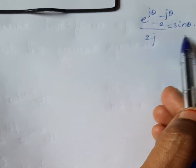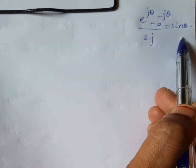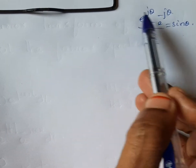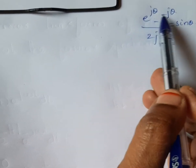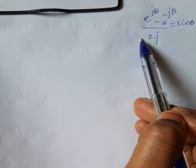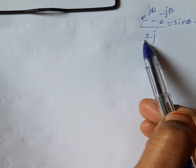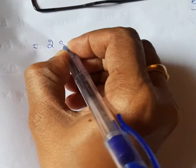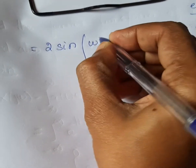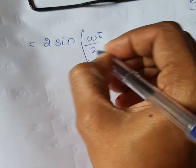We use the Euler identity: (e^(jθ) - e^(-jθ)) / 2j = sin(θ). Our expression is in the form (e^(jθ) - e^(-jθ)) / j, which equals 2·sin(θ), where θ = ωτ/2.